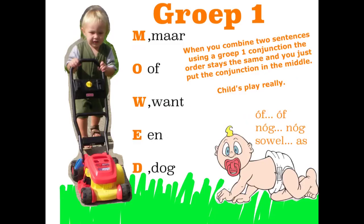Here's Groep 1. I like to remember it by thinking of the word MOWED and imagining a little child mowing the grass. The reason why I associate it with a child is because Groep 1 is by far the easiest. When you combine two sentences using a Groep 1 conjunction, the word order stays just the same for both sentences and you just put the conjunction in the middle. I like to think of it as child's play.